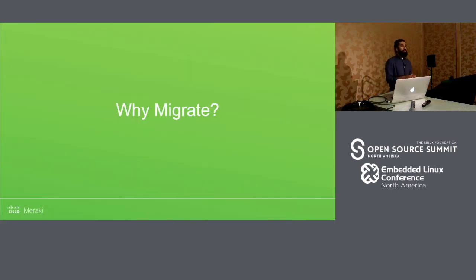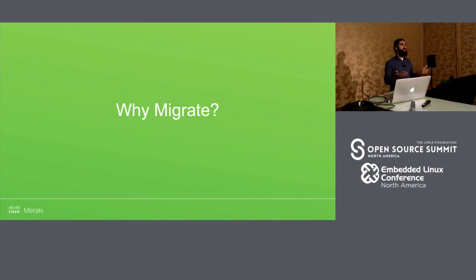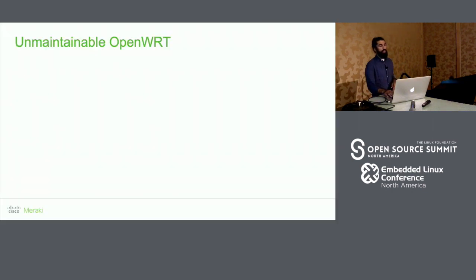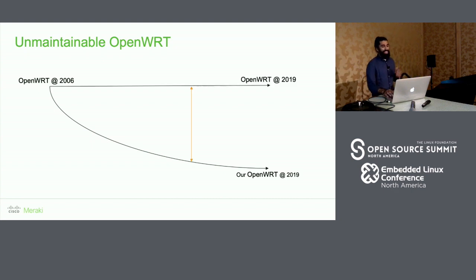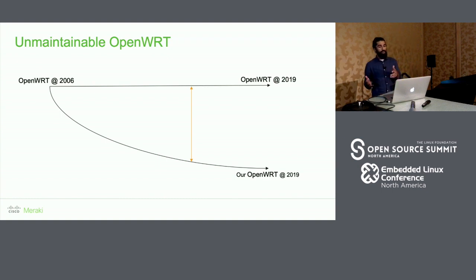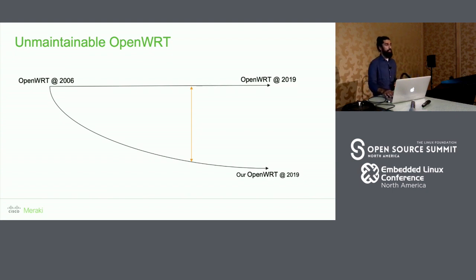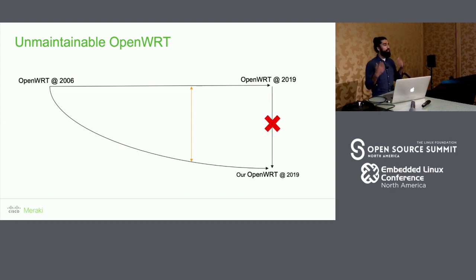So you might be wondering: why am I here talking about Yocto? Why don't we just take the build system we have, improve it a bit, and upgrade it? Well, our OpenWRT checkout is from 2006, and in the 13 years since then we've made many changes to it. At the same time, upstream OpenWRT has continued making their own changes, and we have diverged further and further. At this point it's fairly difficult — if not impossible — to pull in their new improvements and fixes.